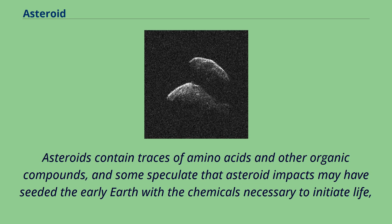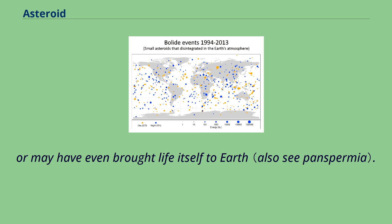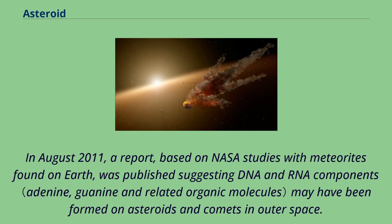Asteroids contain traces of amino acids and other organic compounds, and some speculate that asteroid impacts may have seeded the early Earth with the chemicals necessary to initiate life, or may have even brought life itself to Earth. In August 2011, a report based on NASA studies with meteorites found on Earth was published suggesting DNA and RNA components may have been formed on asteroids and comets in outer space.